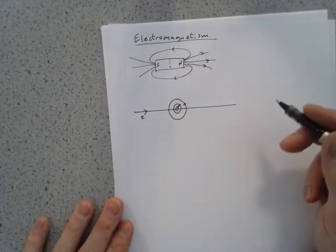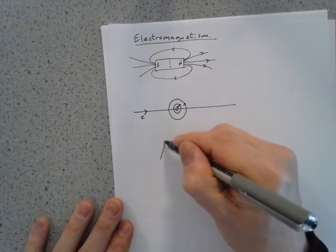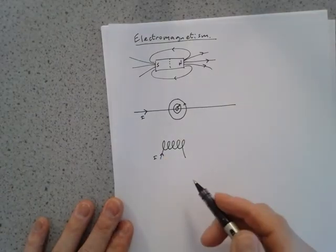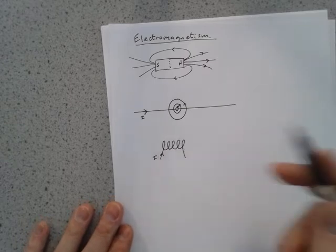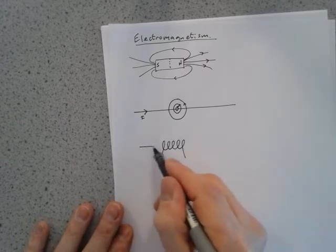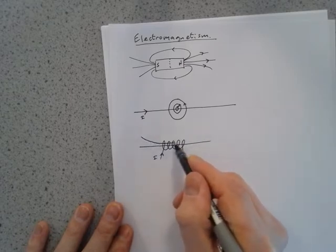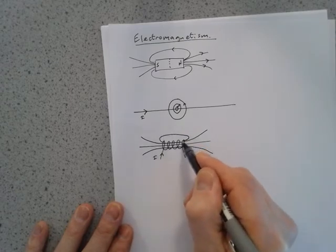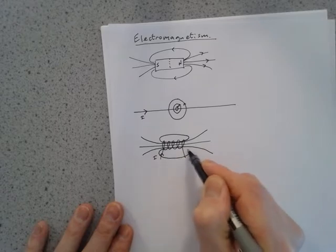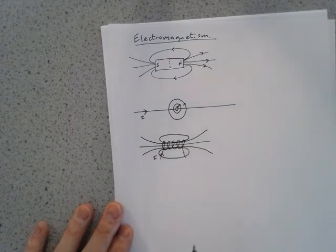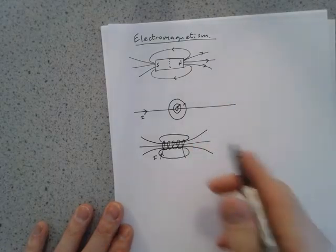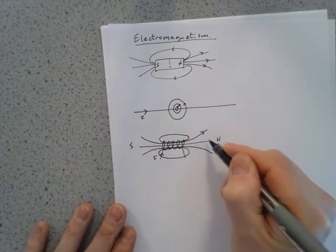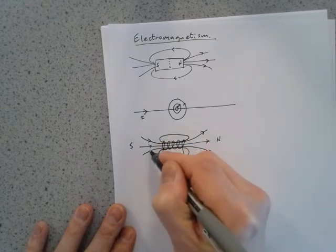If we have a wire wound into a coil and we pass a current through that coil, it also produces a magnetic field around the coil. We can plot the magnetic field and it looks a little bit like that of the bar magnet. There is a right-hand rule which gives us the polarity of the magnet — this end will be the north pole, this end the south pole. Therefore the field lines are going out of the north and into the south.